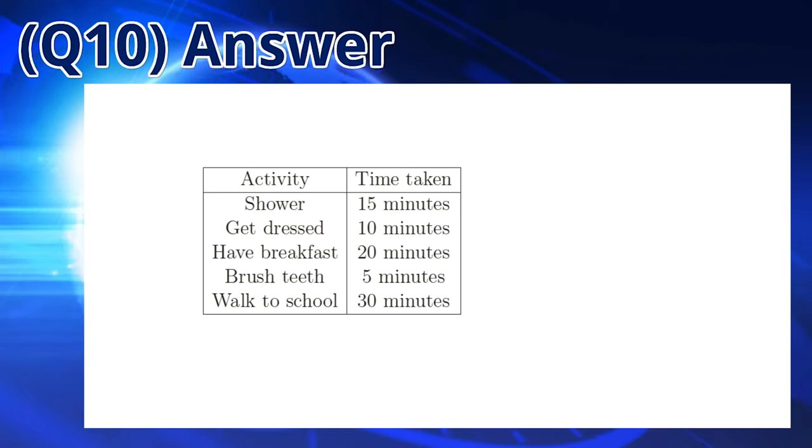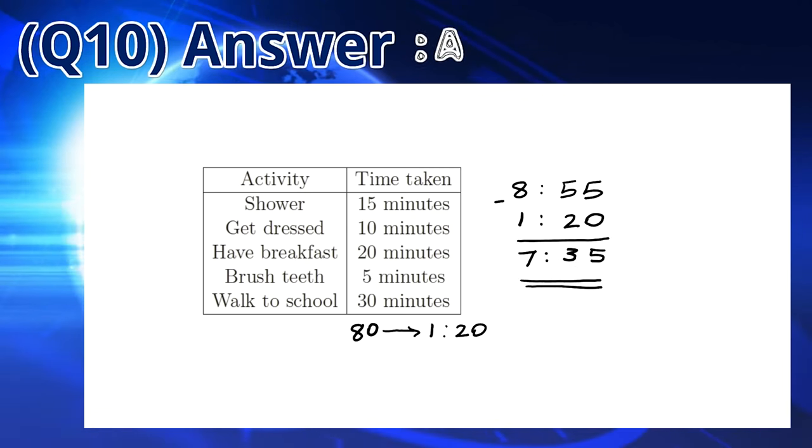When we add the times taken for showering, getting dressed, having breakfast, brushing your teeth, and walking to school, you get a sum of 80 minutes or 1 hour and 20 minutes. You can subtract this from 8:55 and you get a time of 7:35 am. So the answer is A.